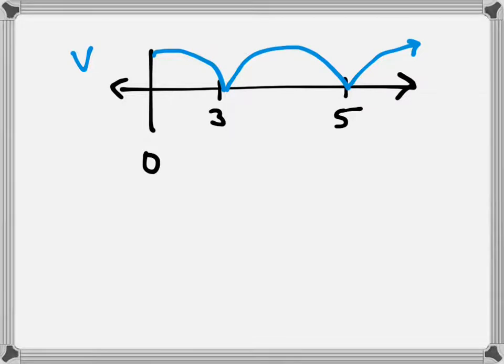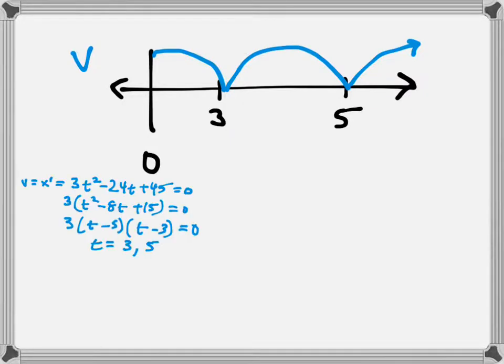Let me bring my velocity function over here. Down there in blue, I have the velocity work copied from the previous slide. I'm going to pick test values in each interval. I'm going to pick a number between 0 and 3, 1 seems pretty good. If I pick 1 and plug it into the velocity function, using the factored form, I get 3 times 1 minus 5 is negative, and 1 minus 3 is also negative. So 3 times negative times negative yields a positive.